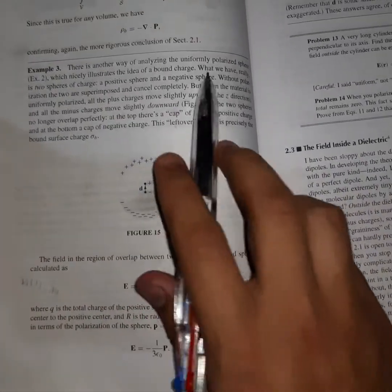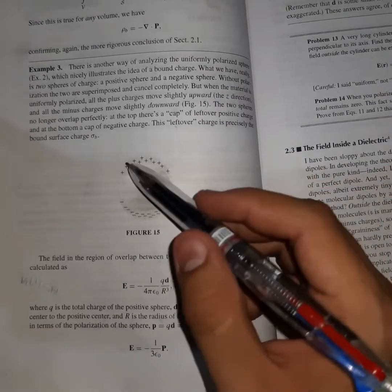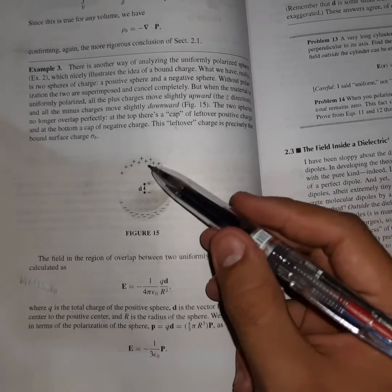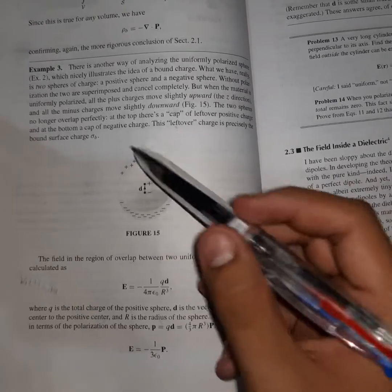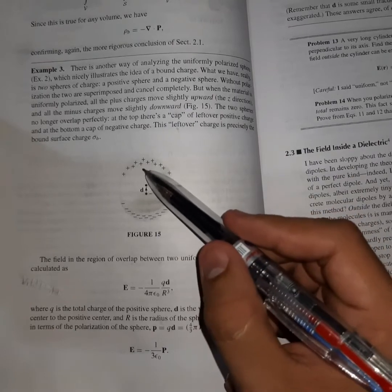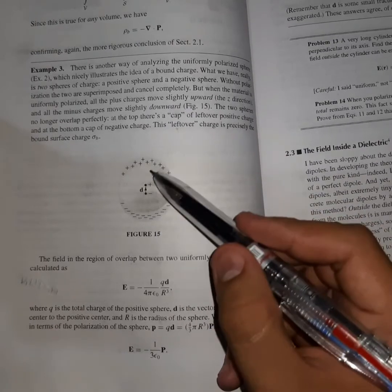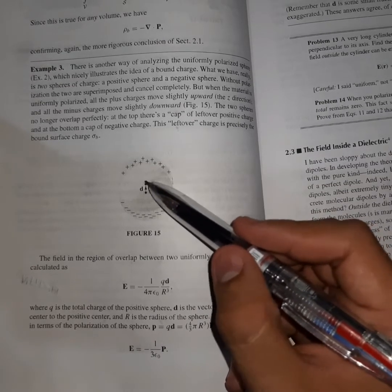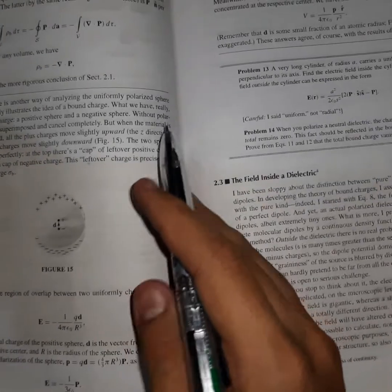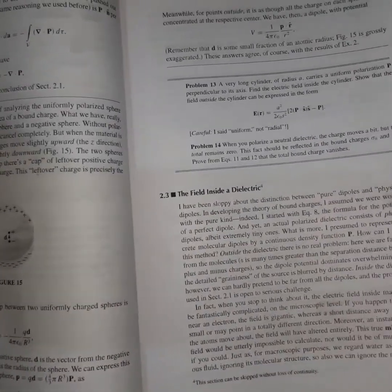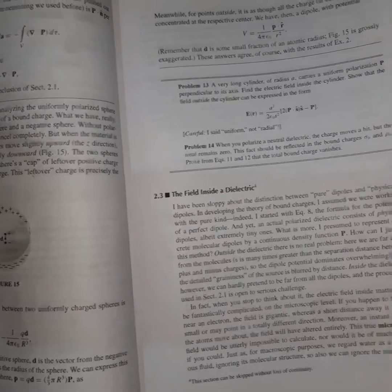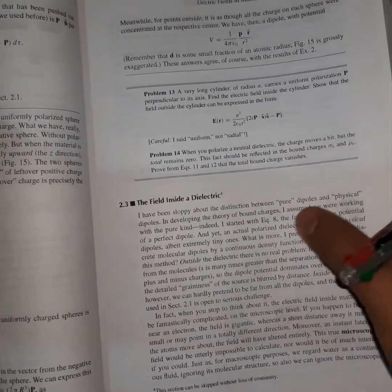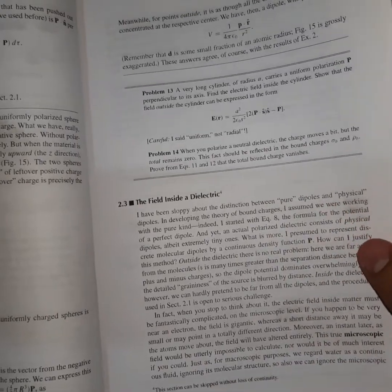We have a very long cylinder of radius A carrying uniform polarization P perpendicular to its axis. We need to find electric field inside the cylinder and outside the cylinder. Because if a body is polarized, we have to consider it as two similar bodies. The center will be acting as a dipole now, so there will be some difference in their centers and it will look like a double sphere to you.